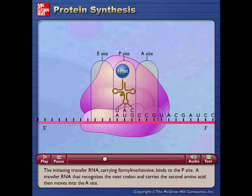The initiating transfer RNA carrying formyl-methionine binds to the P-site. A transfer RNA that recognizes the next codon and carries the second amino acid then moves into the A-site.